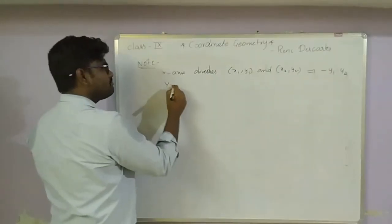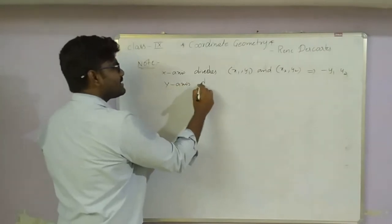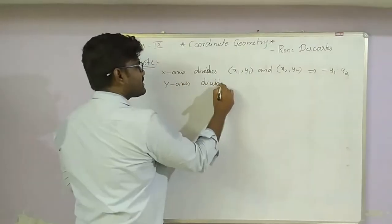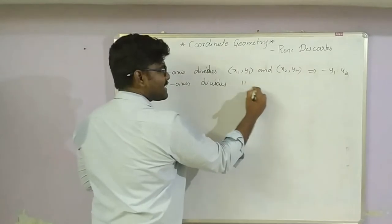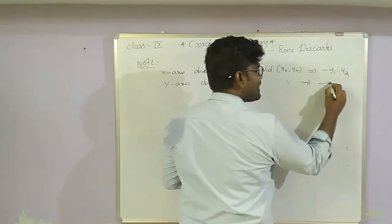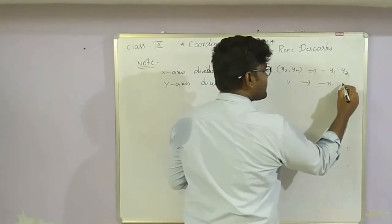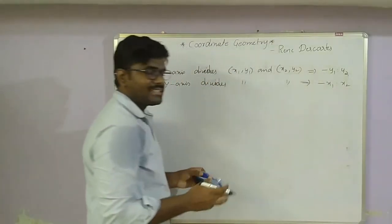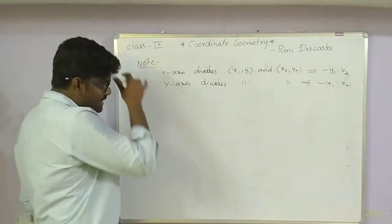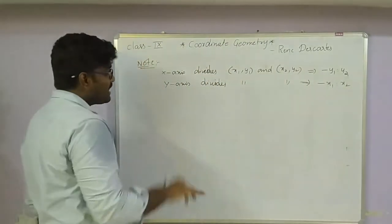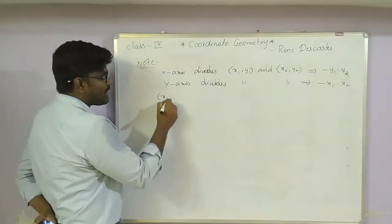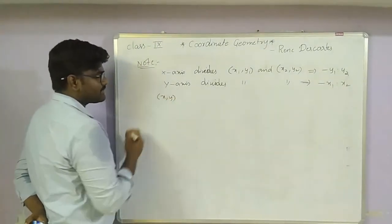Similarly, when the y-axis divides a line segment joining (x1, y1) and (x2, y2), the dividing ratio is −x1 : x2.